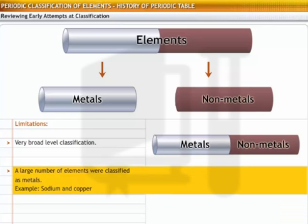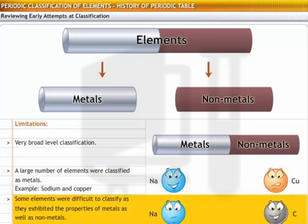For example, sodium and copper were both characterized as metals, but their chemical properties are very different. Some elements such as boron exhibited the properties of both metals as well as non-metals. It was difficult to determine how to classify such elements.